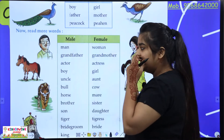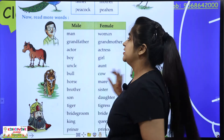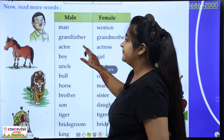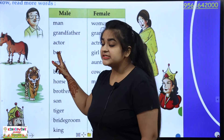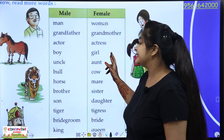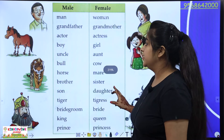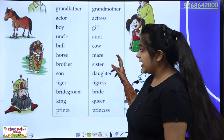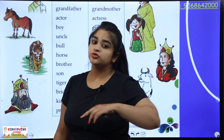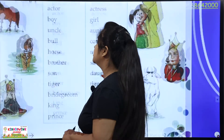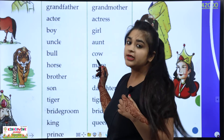Clear? Male or female — male is a male and female is a female. Man and woman. Grandfather and grandmother. Actor and actress. Hero and heroine. Boy and girl. Uncle and aunt. Bull and cow — the male is a bull and the female is a cow.